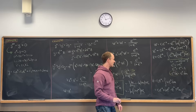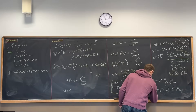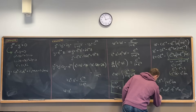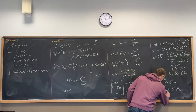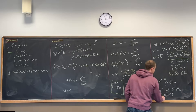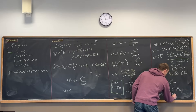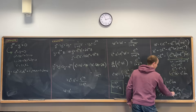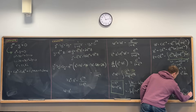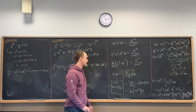Substituting u back in: u is the natural log of 1 plus e to the minus x, and e to the u is 1 plus e to the minus x. So z equals c1·e to the minus x plus the natural log of 1 plus e to the minus x times (1 plus e to the minus x) minus (1 plus e to the minus x) plus c2.